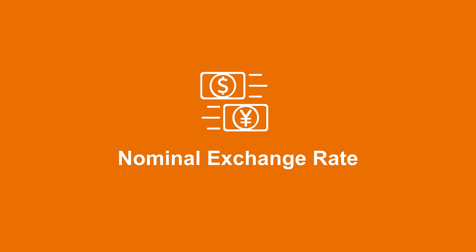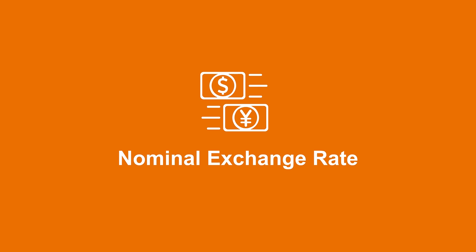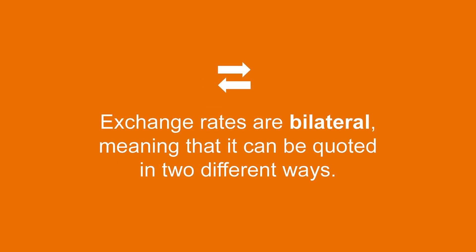Let's start our exploration of exchange rates by looking at the nominal exchange rate. This is the exchange rate that you see quoted in financial news, or the exchange rate that you deal with when you are traveling abroad and trying to exchange US dollars for foreign currency. Exchange rates are bilateral, meaning that it can be quoted in two different ways. For example, we can quote the nominal exchange rate between US dollar and Japanese yen as 100 — that is 100 yen for 1 US dollar. Or we can quote the same nominal exchange rate as 0.01, which means we just need 1 US penny for 1 Japanese yen.